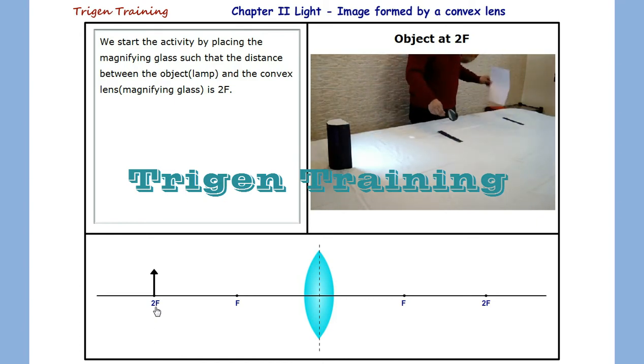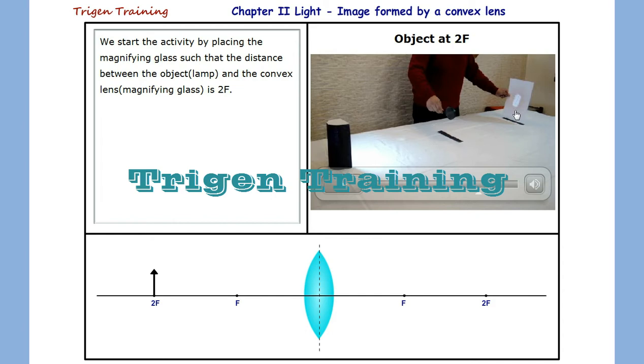We would place the magnifying glass on the first marker and the paper on the second marker. We see an image of the spiral lamp formed on the paper which is the same size as the spiral lamp but inverted.